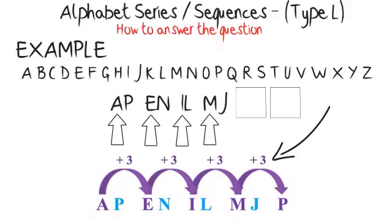When you reach the last letter, which is M, you should continue the pattern once more. M plus 3 is P, so the first half of your answer is P. A-P, E-N, I-L, M-J, P.